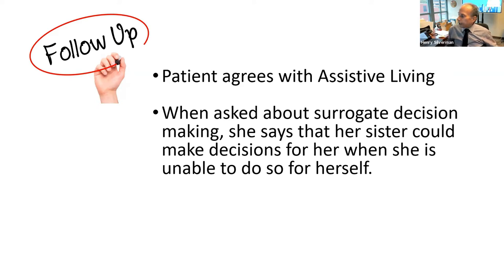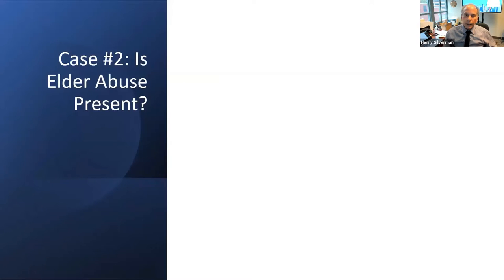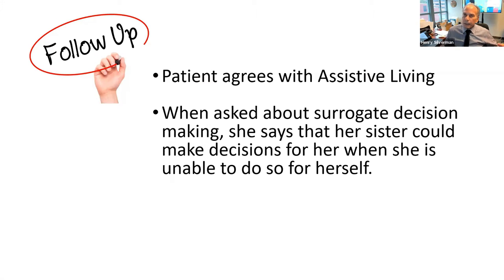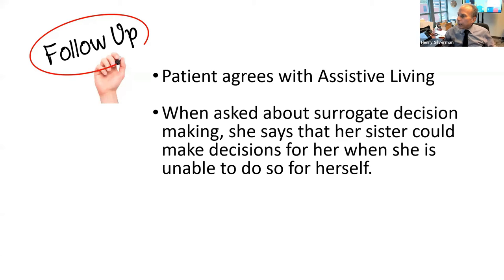What do you think about the animosity between the sister and the patient, having been estranged for four years? Does that make the sister a good surrogate for the patient, or should we go to court? There's a lot of family members who are estranged from each other, so that might be normal. Does it bother anyone that the sister says, 'If she dies, I'm not going to feel bad about that'?